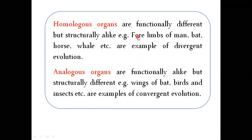Homologous organs are functionally different but structurally alike. Homologous structures are structurally similar but functionally different — for example, the four limbs of man and horse. Divergent evolution is associated with homologous organs — where the same structure performs different functions.